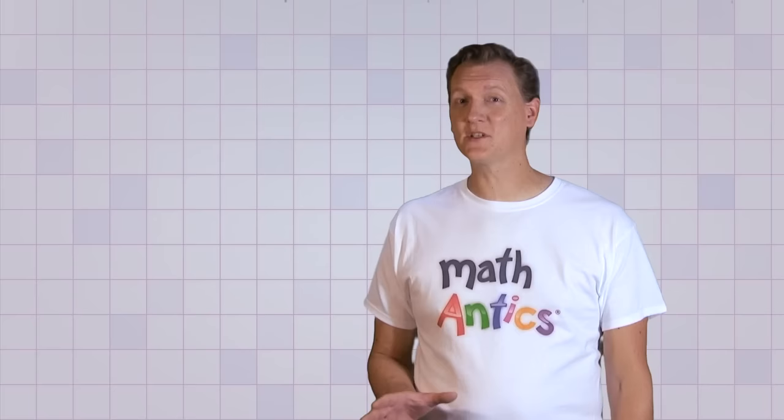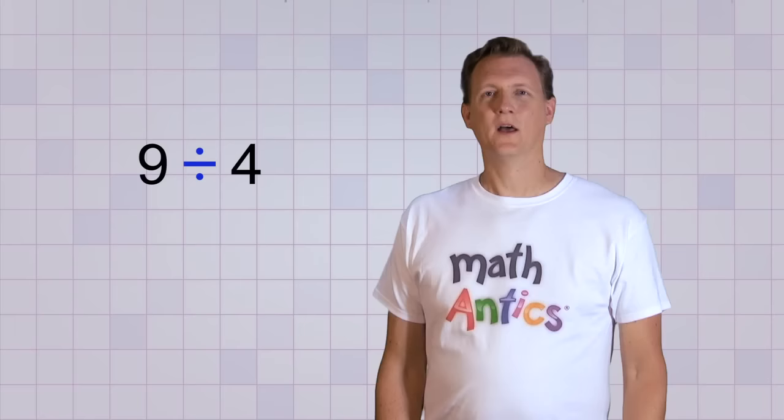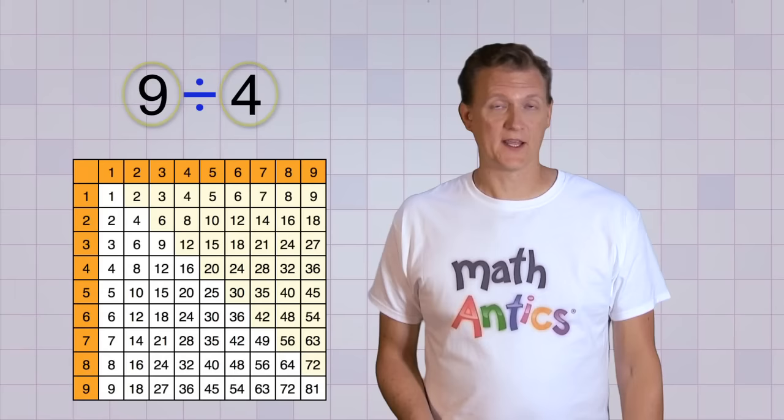Well, at least it was that simple when you learned about the fact families. Now it's going to get a little bit tricky because most division problems aren't quite this easy. Like this one, 9 divided by 4. The trouble here is that 9 and 4 aren't part of a fact family, so you can't just find the answer on the multiplication table.